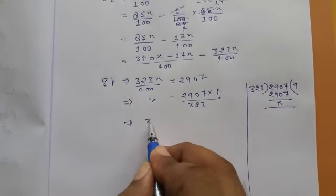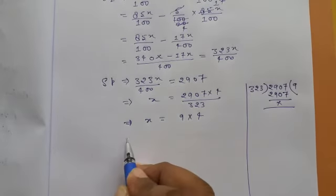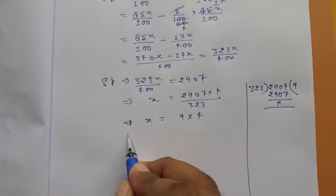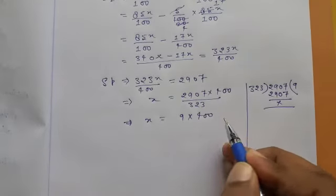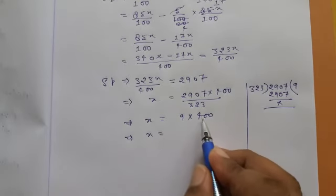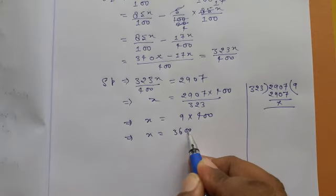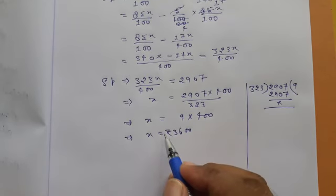So X equals 9 into 4, it was 400. So 3,600 will be X.